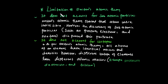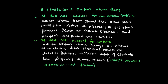The limitation, or drawback, of Dalton's atomic theory: it does not account for subatomic particles. The Dalton atomic theory states that atoms were indivisible. However, the discovery of subatomic particles such as proton, electron, and neutron shows that atoms are not indivisible.